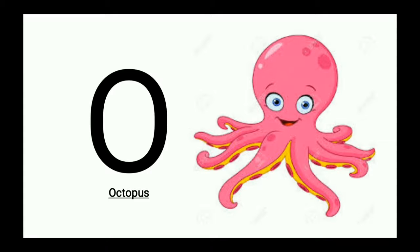Octopus. What is it children? Octopus. It is a water animal. Octopus has eight arms. Octopus ke eight arms hotay hain. It is a soft bodied animal.